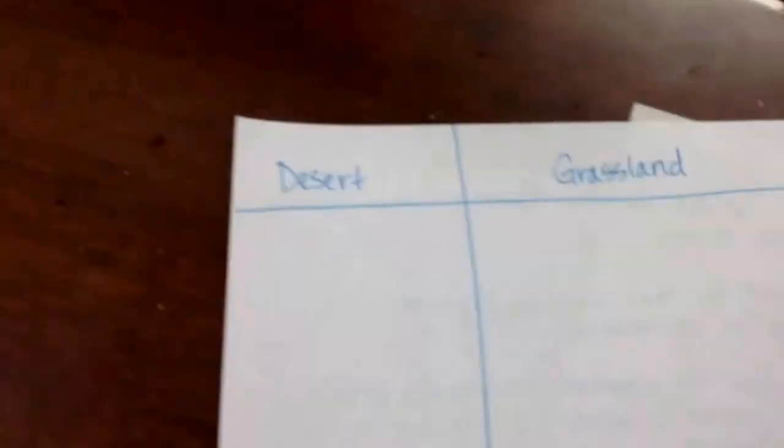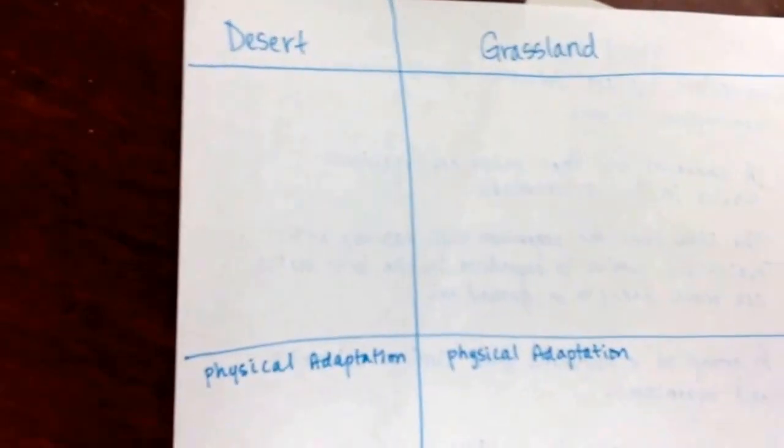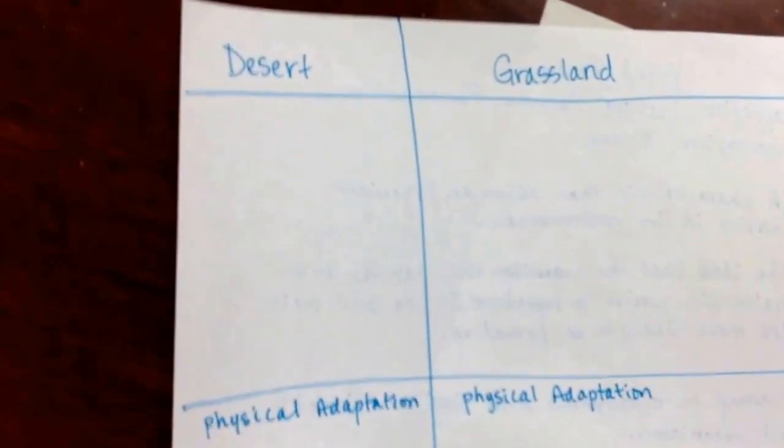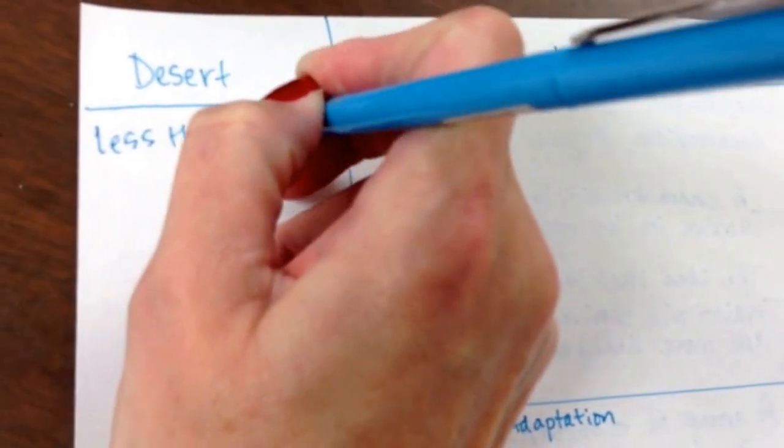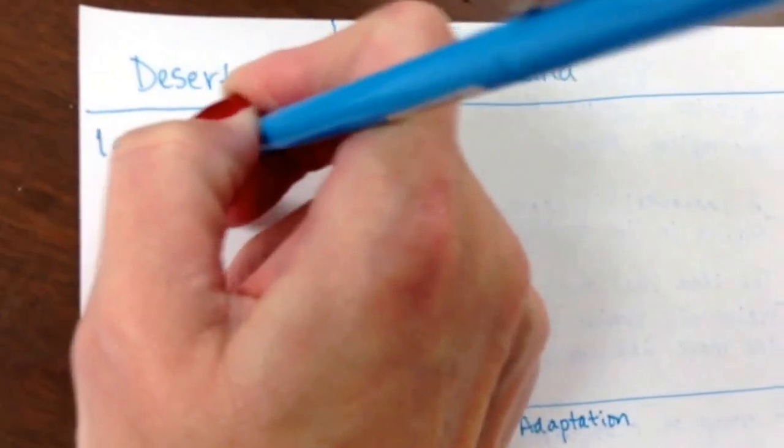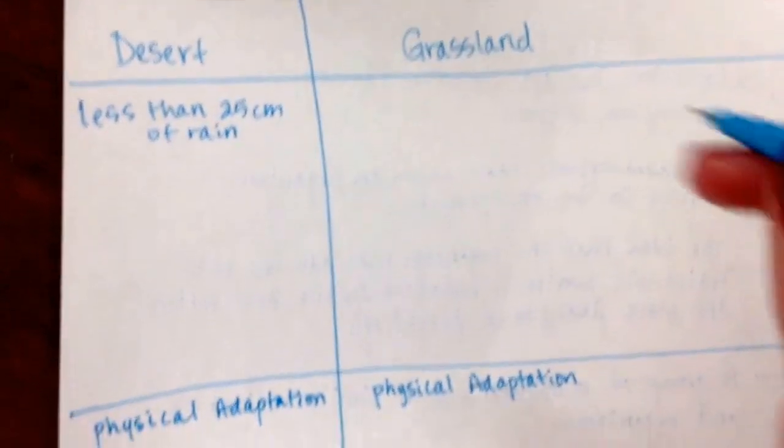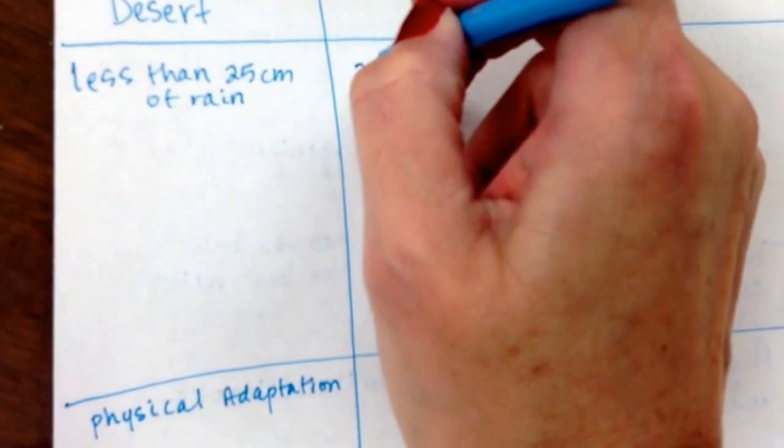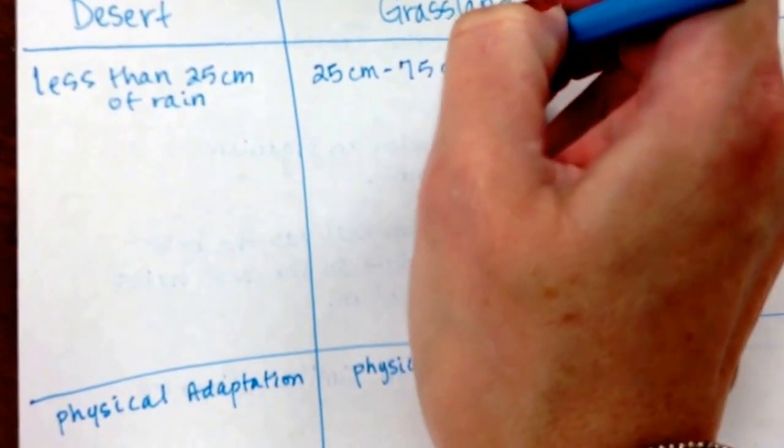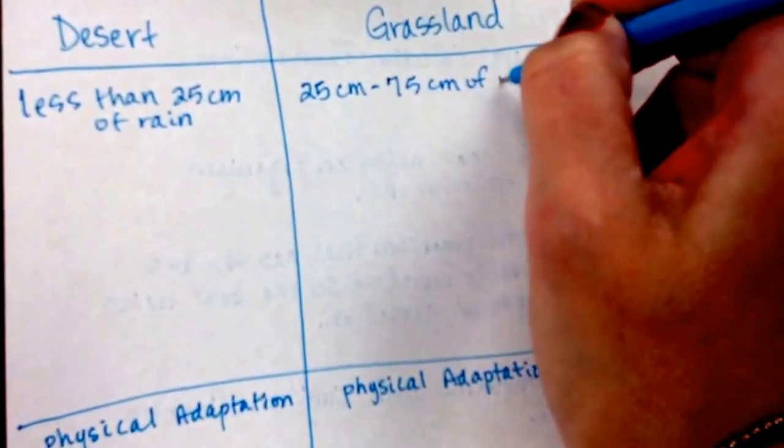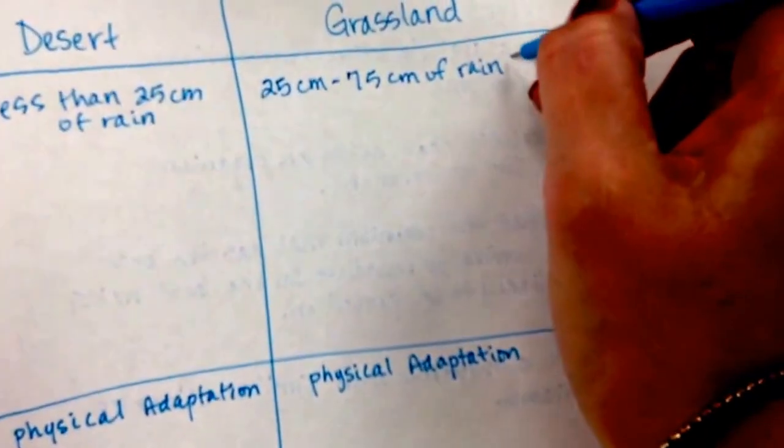All right, so this test was about deserts and grasslands. Let's talk about some characteristics about each one. The desert, first of all, how much rain would it receive in a year? We're going to say less than 25 centimeters of rain per year. What about the grassland? How much rain? Well they get the maximum of a desert, so 25 centimeters to 75 centimeters of rain per year.